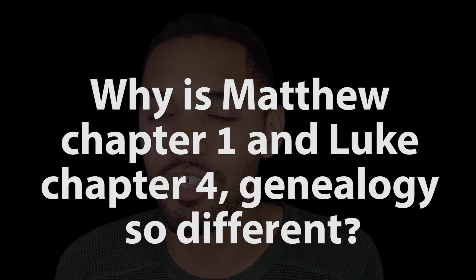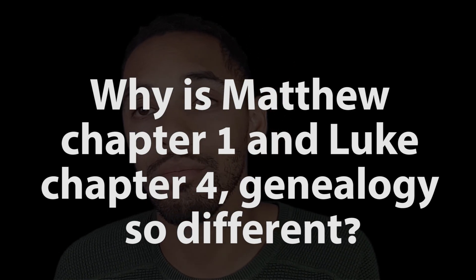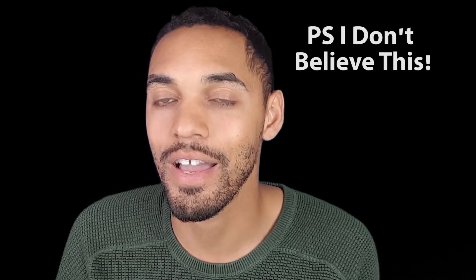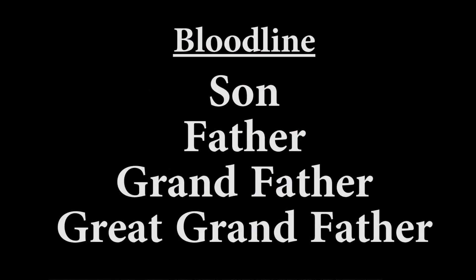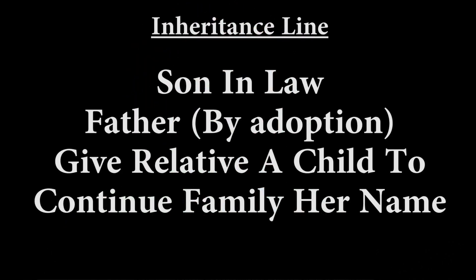Why is Matthew chapter 1 and Luke chapter 3's genealogy so different? Some people have said through the generations that the difference in these genealogies is because one is the bloodline genealogy and another is a genealogy of inheritance. You could have people related through a direct line of blood, or others established for the throne through adoption, or because another generation had no children. These concepts were common in the Old Testament, but I don't believe that explanation.